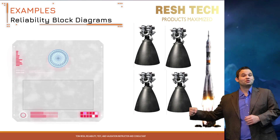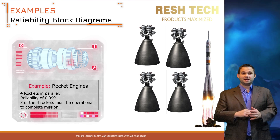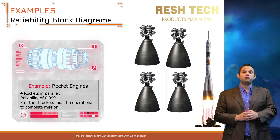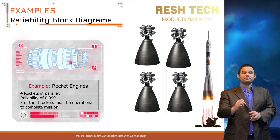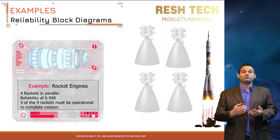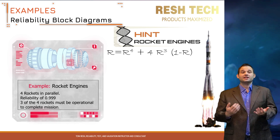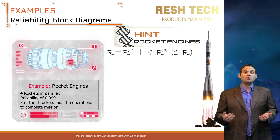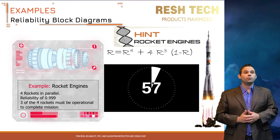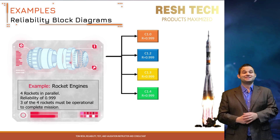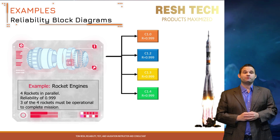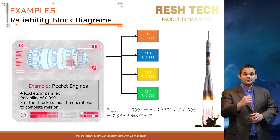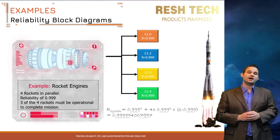In this real-world example we have four rocket engines that provide thrust to put a rocket into space. The four rocket engines are in parallel and the reliability of each engine is 0.999. In order to complete the mission, three of the four engines must always be operational. This equation is a little tricky since there are conditional requirements. Pause and solve — we end up with a very reliable system at 0.9999.